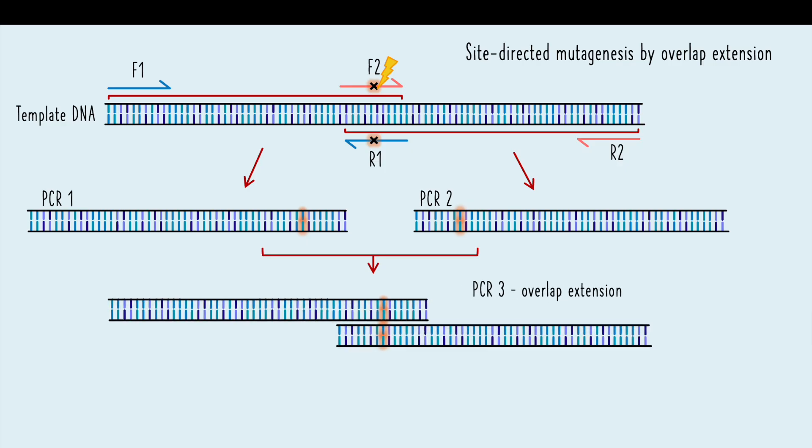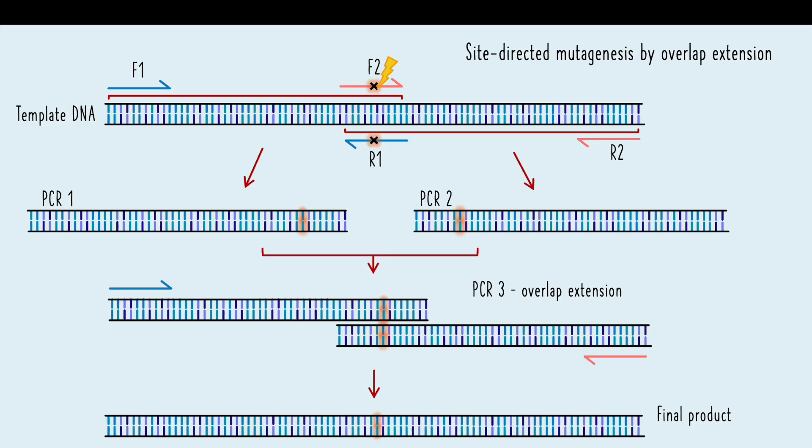In the final step, combine both PCR products and perform another PCR using only the outermost primers. This allows the two overlapping fragments to anneal and extend into a single full-length product that contains your desired mutation.